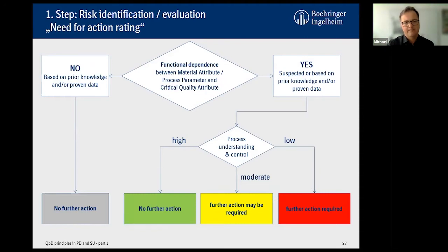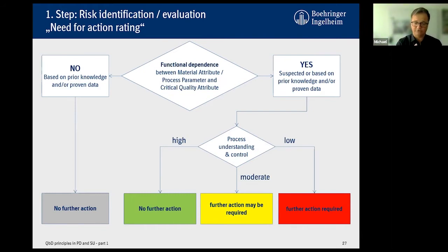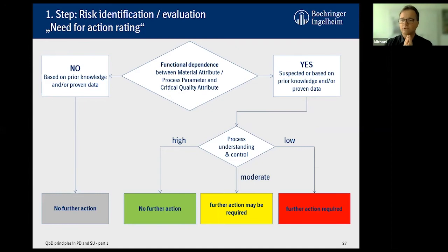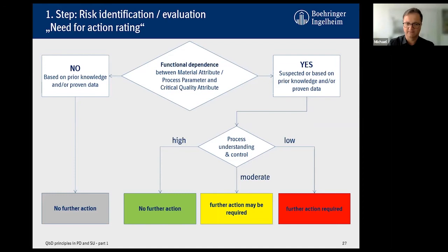The logic behind our risk assessment: the first question you need to ask yourself is whether there is a functional relationship between a certain material attribute or process parameter and a critical quality attribute. For example, if you have an API with poor solubility and you go through your list and ask whether particle size distribution of this API has an impact on dissolution, you will say yes — either you already have data or you can suspect it, because this is typically the case for poorly soluble compounds.